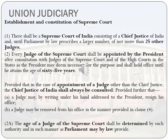Every Judge of the Supreme Court shall be appointed by the President under his seal, after consultation with the Judges of the Supreme Court and of the High Courts in the States. The judges of the Supreme Court and the judges of the High Court are appointed by the President and the retirement age shall be 65 years.